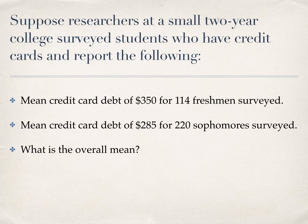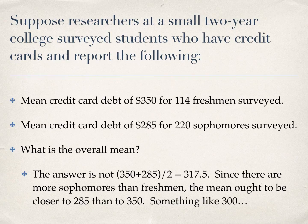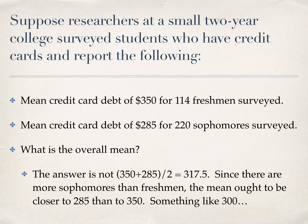Here's a hint: the answer is not the average of these two numbers. A natural first guess would be to take $350 and $285 and find the average of the two, which would be $317.50. But because there are more sophomores than freshmen, the $285 should be counted more heavily than the $350.